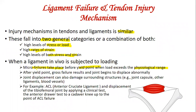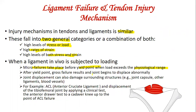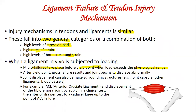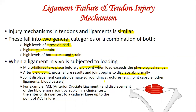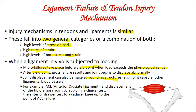Micro failure takes place before the yield point when load exceeds the physiological range. After the yield point, gross failure results, as seen in the load-elongation curve, and joints begin to displace abnormally. Once a joint is displaced, it may affect surrounding structures including the joint capsule, other ligaments, and blood vessels, which can be dangerous. For example, ACL injury causes anterior tibiofemoral joint displacement.